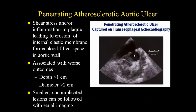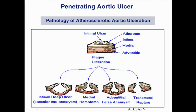The penetrating aortic ulcer is something we started recognizing more often with imaging advances. It may be just an erosion of a plaque into the wall. Here on TEE you can see a narrow neck and a very large outpouching — this could be a real problem. Ones greater than 2 cm across or more than 1 cm deep are associated with worse outcomes. Small ones can be watched, but large ones especially in symptomatic patients warrant discussion with vascular surgery about repair — you want to address it before it ruptures.